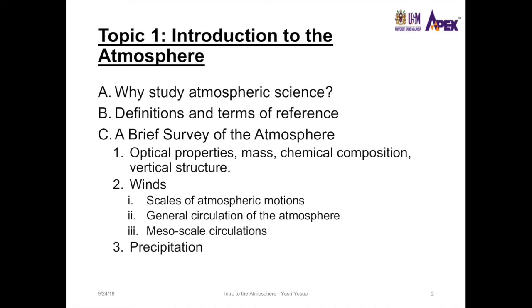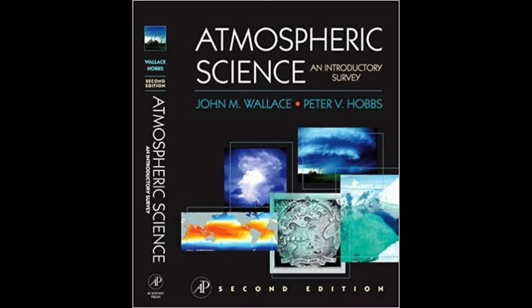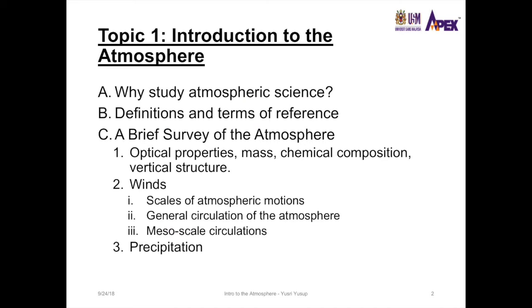There are more topics in the book, but I chose the ones most relevant for this region, which is Southeast Asia, or Malaysia specifically. In the winds topic, we're going to talk about the scales of atmospheric motion, the general circulation of the atmosphere, and the mesoscale circulations — starting from the very large scale down to the small scale.